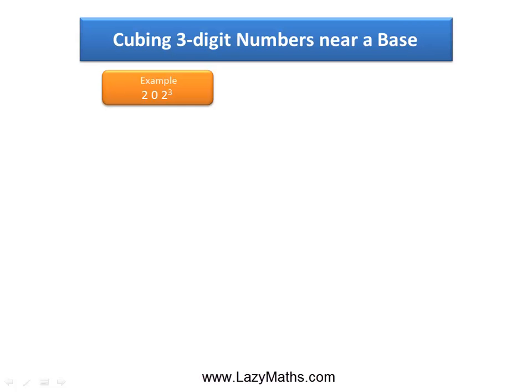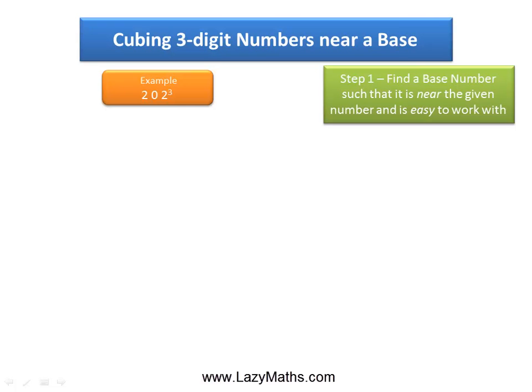Here's an example of cubing three-digit numbers near a base: 202 cube. The first step is to find a base number. A base number is a number that is near the original number 202 and is easy to work with. In this case, the base number can be 200.